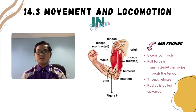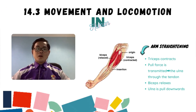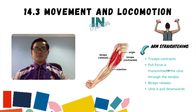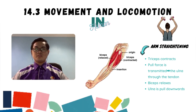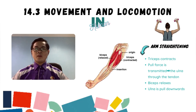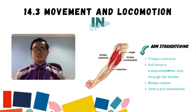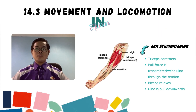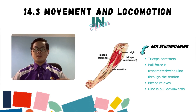The radius is pulled upward, causing the arm to bend. Arm strengthening, on the other hand, is when the triceps contracts and the pull force is transmitted to the ulna through the tendon. At the same time, the biceps relax and the ulna is pulled downward, causing the arm to become straight.